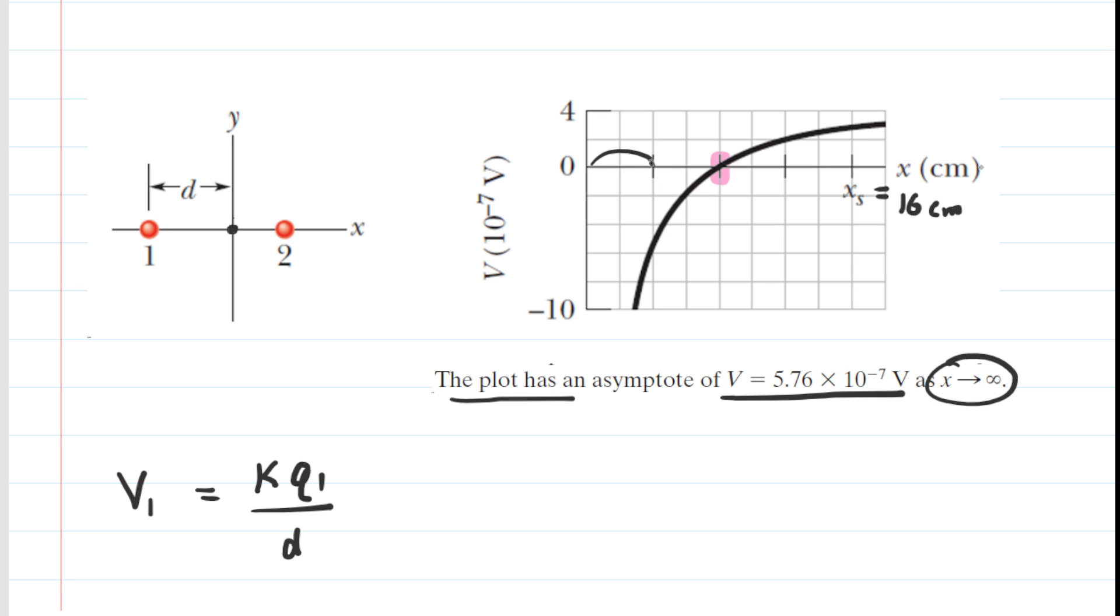There are 1, 2, 3, 4 tick marks to get to x sub s. So if you divide 16 by 4, then you get 4 centimeters. So each tick mark is 4 centimeters, which means that the second tick mark here is located at 8 centimeters.